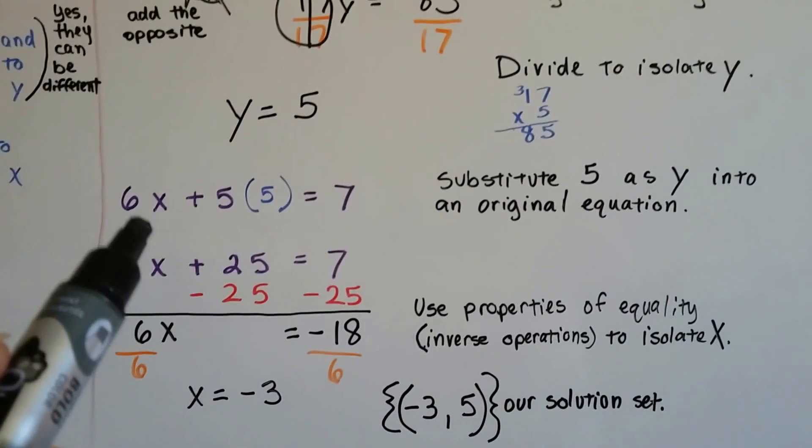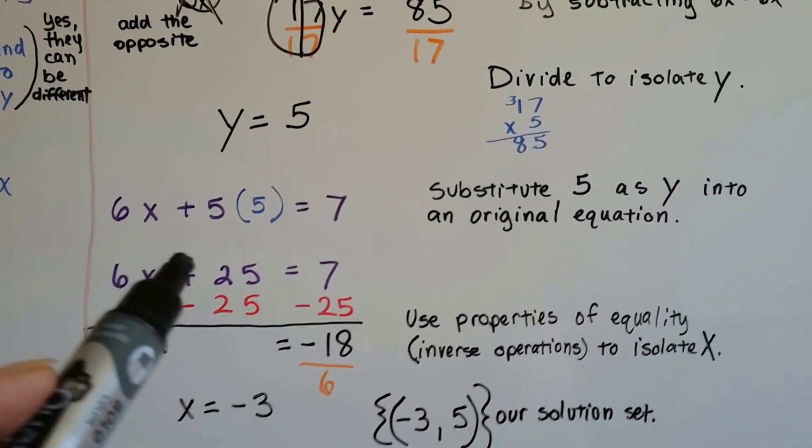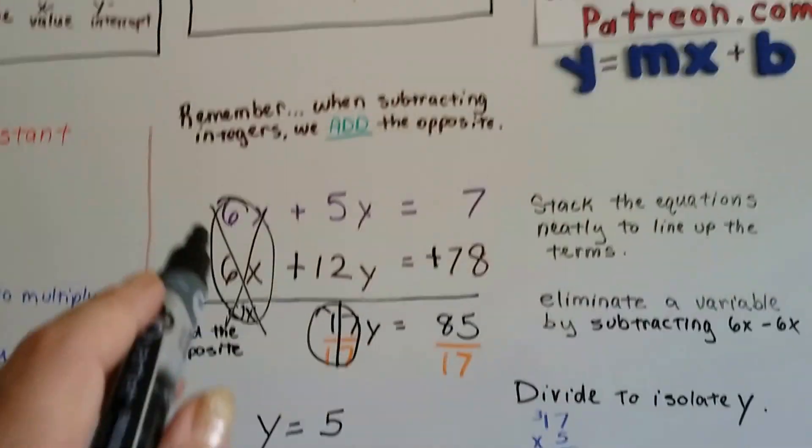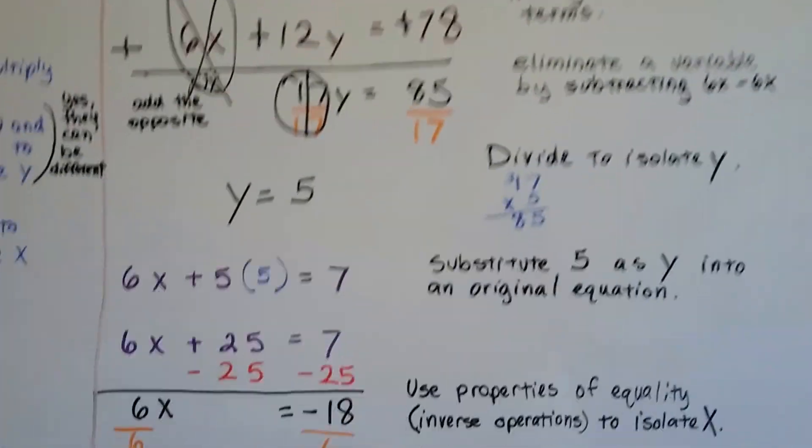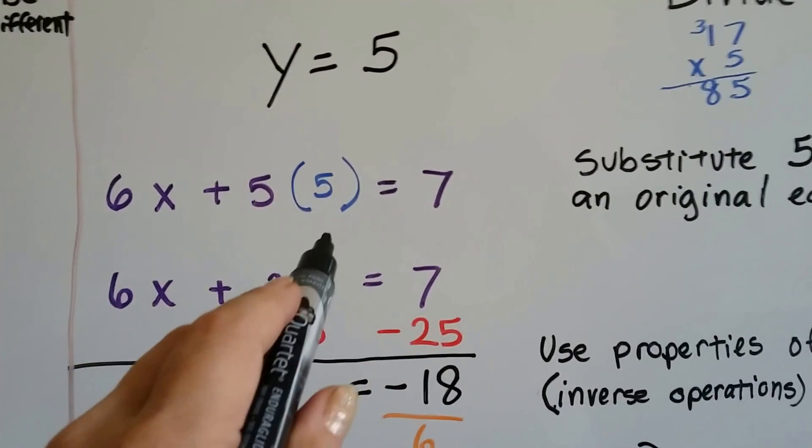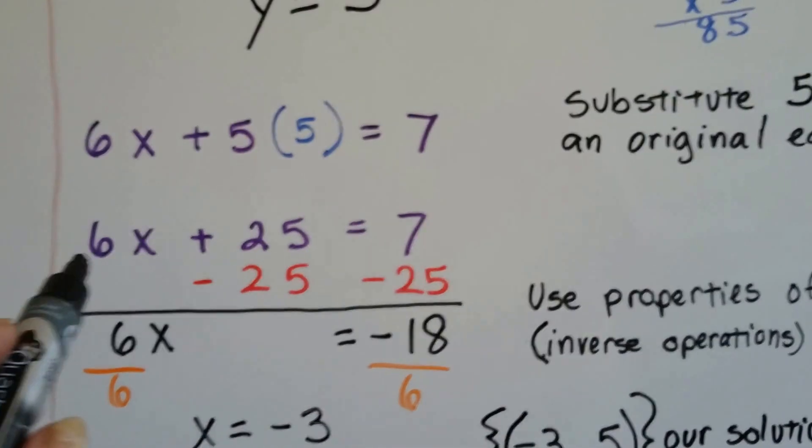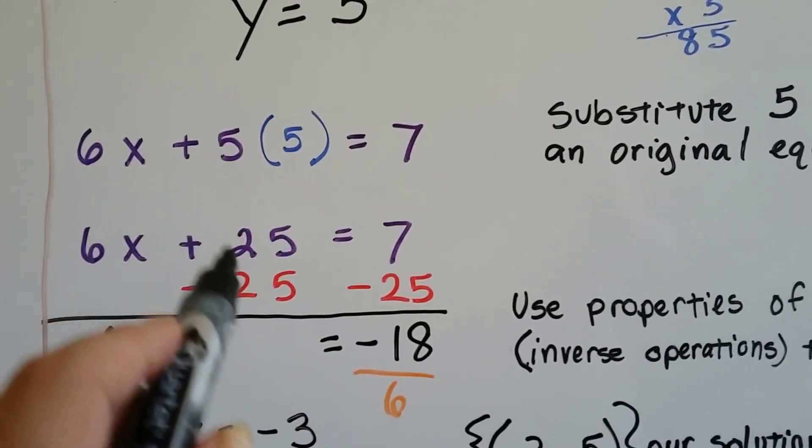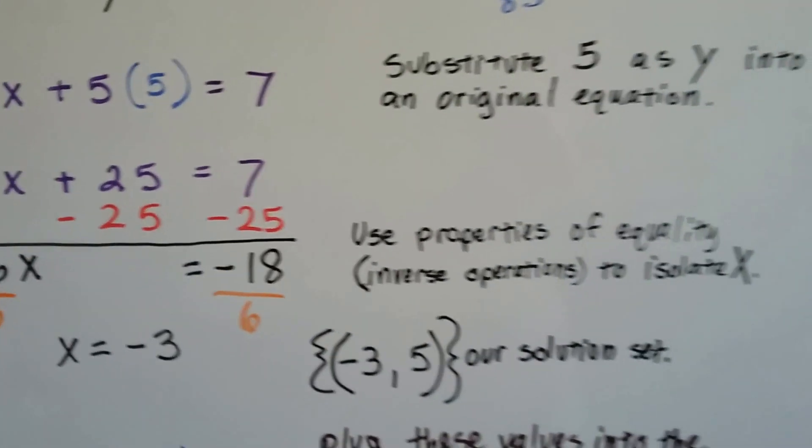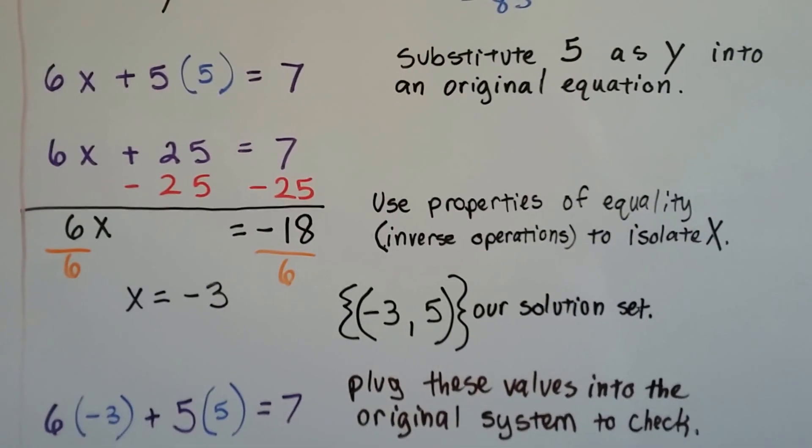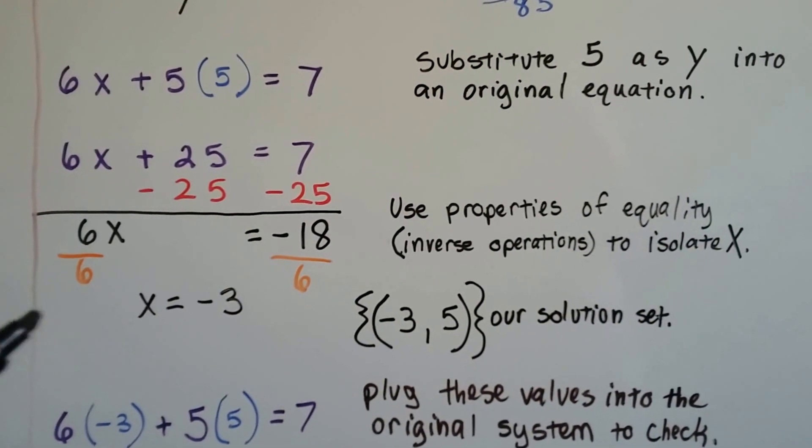So now I can substitute that 5 as the y into an original equation. So I chose the top one. 6x plus 5y equals 7. So now y is going to be 5. So now we've got 6x plus 25 equals 7. Now we can use the properties of equality, those inverse operations, to isolate the x.